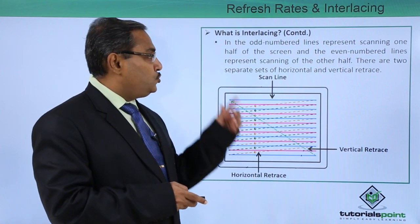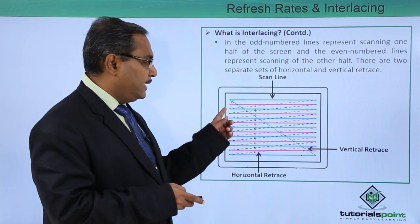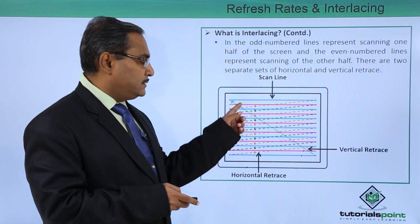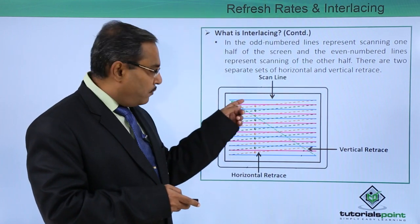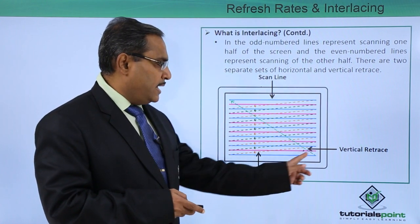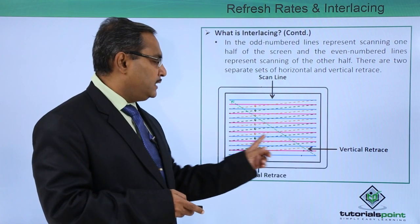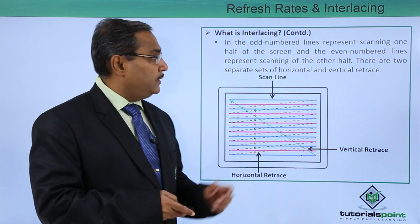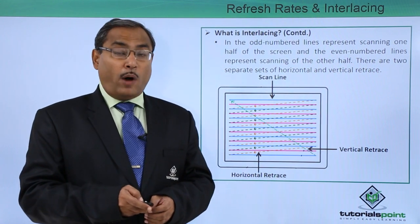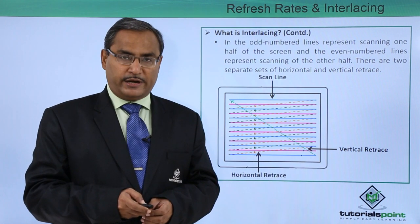The odd-numbered lines represent scanning one half of the screen and the even-numbered lines represent scanning of the other half. There are two separate sets of horizontal and vertical retrace. As you can see, adjacent lines are marked in different colors, while alternate lines share the same color. Here we have the horizontal retrace and the vertical retrace, along with the respective scan lines. In this way, we have discussed what interlacing is and what the refresh rate is.